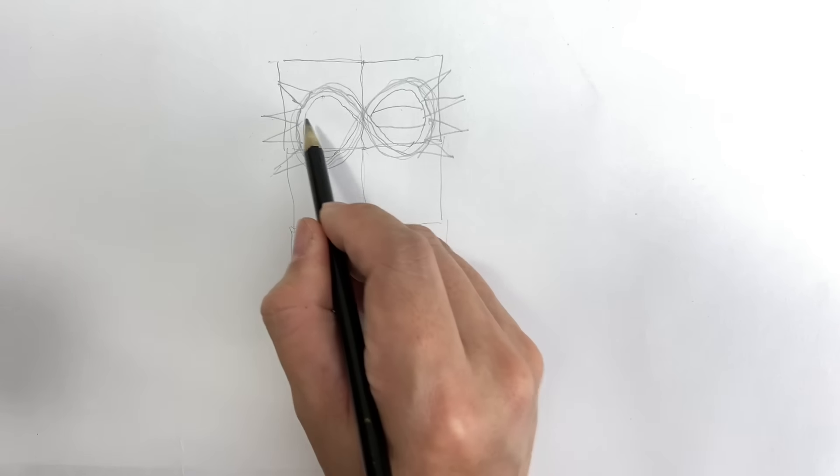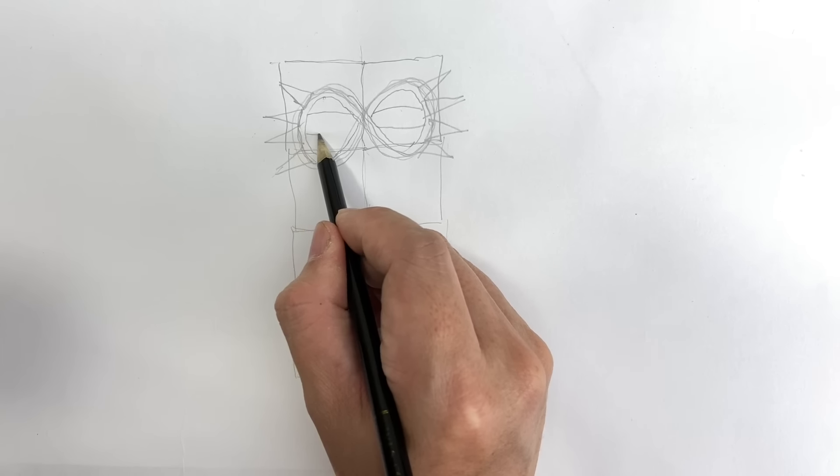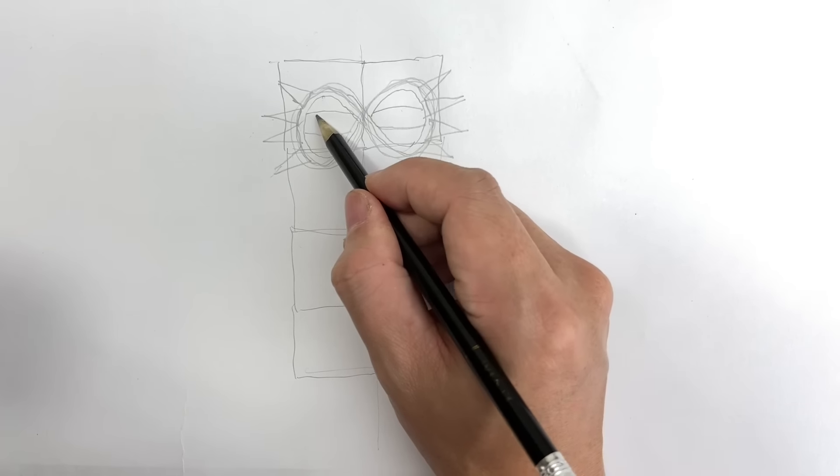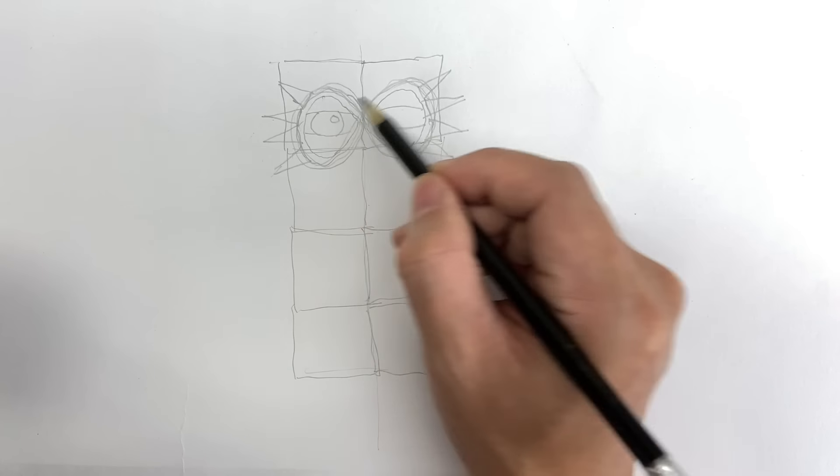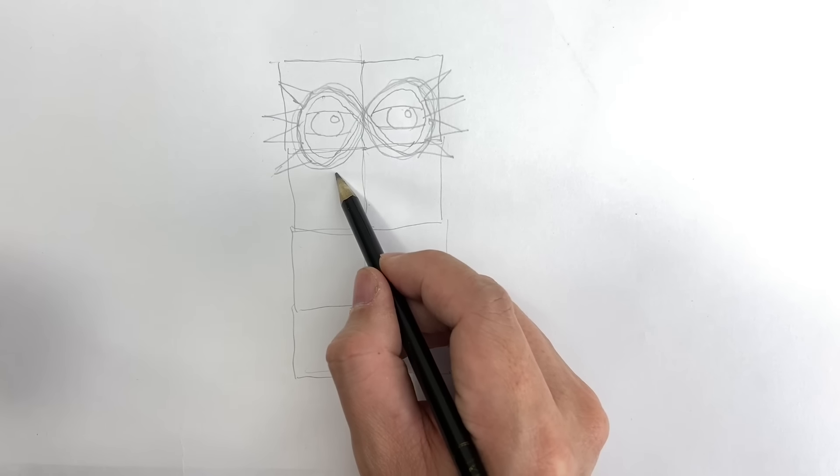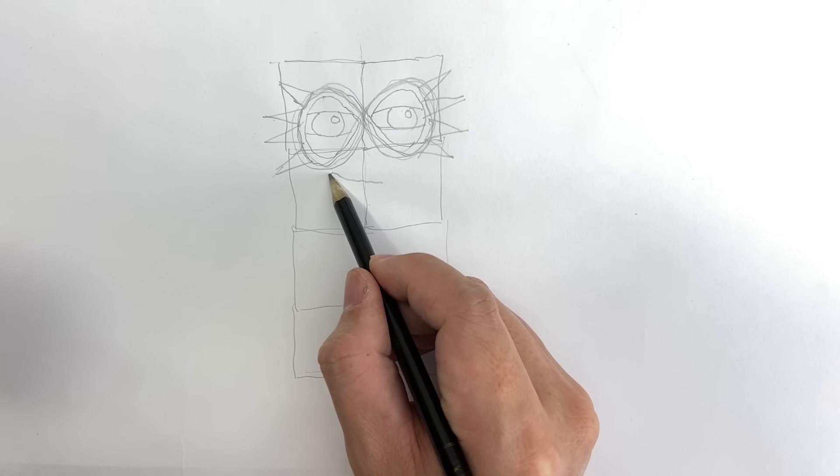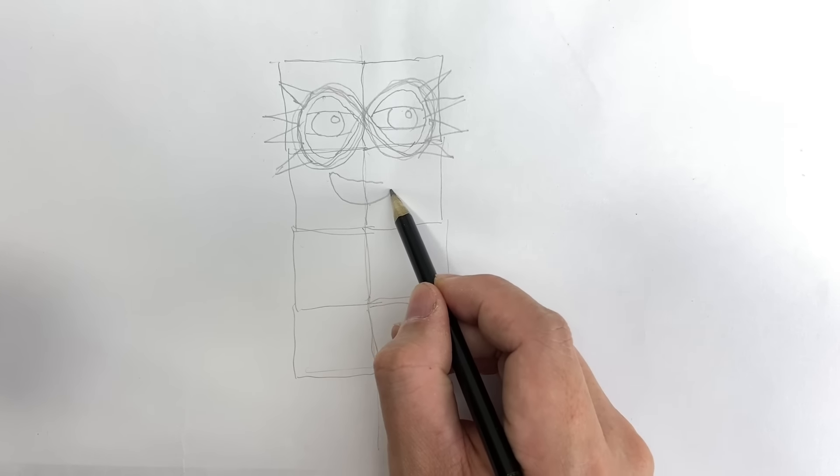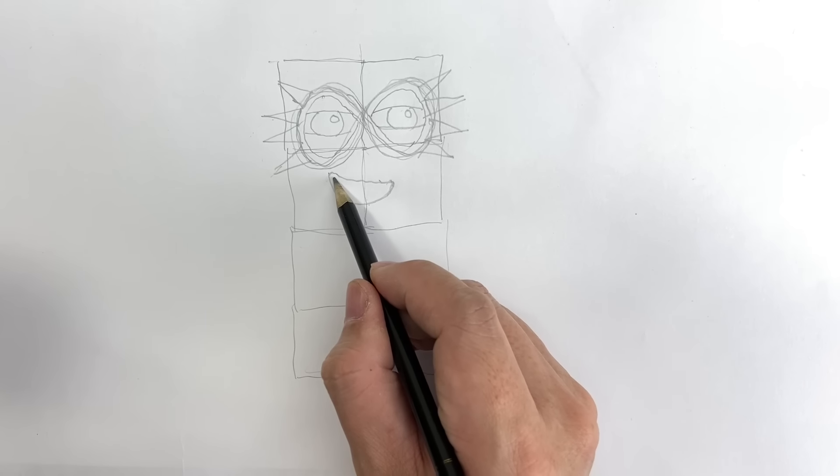Once you're done with the mask, we can now draw his eyes. Draw two sausage shapes for his eyelids, which are usually half closed. Then the pupils of his eyes and two smaller circles for the reflection. For his mouth, draw a half circle slightly leaning on one side with the corners curved.